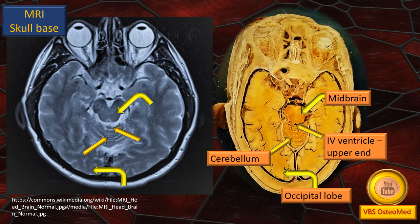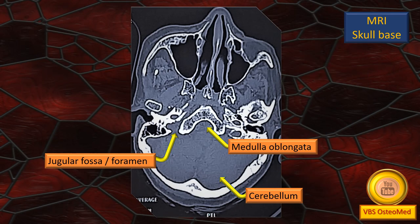The MRI skull base is now compared to a near-matching cross-section of an actual specimen to show correlation. Although not a perfect match, four structures are labeled on both: the midbrain, the upper end of the fourth ventricle (small gap), the occipital lobe, and a small part of the cerebellum immediately behind the midbrain. A slightly lower-level MRI begins to show the anterior edge of the foramen magnum, corresponding to the medullospinal junction.